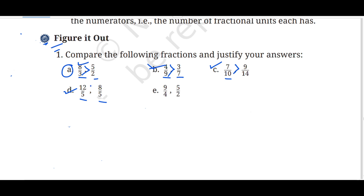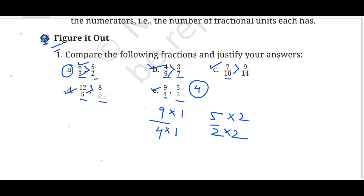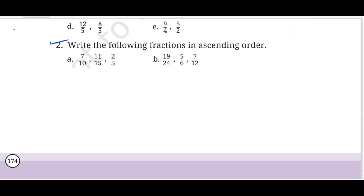For part D, if you have the same denominator then we simply compare the numerators. Here 12 upon 5 is bigger than 8 upon 5 — when you have the same denominator, comparing or addition or subtraction is straightforward. For part E, we have denominators 4 and 2. LCM is 4. For 5 upon 2: multiply by 2 to get 10 upon 4. Since 10 is bigger than 9, 5 upon 2 is greater than 9 upon 4.